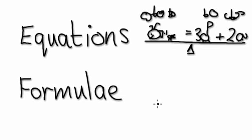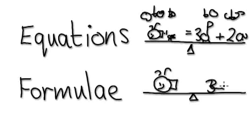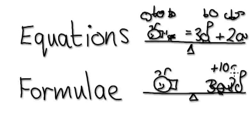A formula is when you have one thing — let's say a blue whale — equals whatever over here. So you can have three elephants, two giraffes, plus ten chickens, as long as you only have one thing on this side.